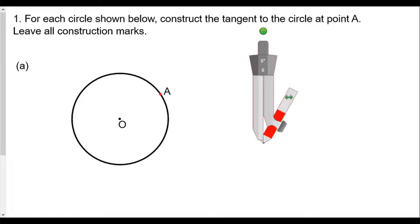The first question, number one: for each circle shown below, there's part A and part B. Construct a tangent to the circle at point A and leave all construction marks. So our first step is to draw the radius — a line that passes through the center through our point of tangency A.